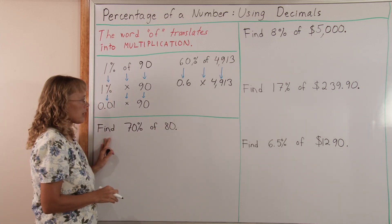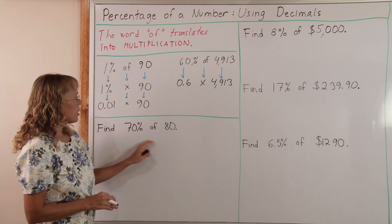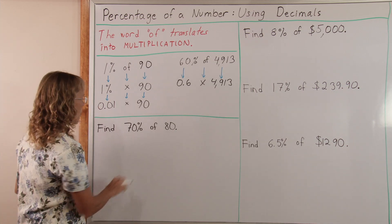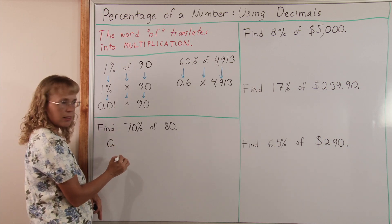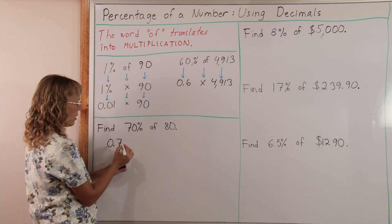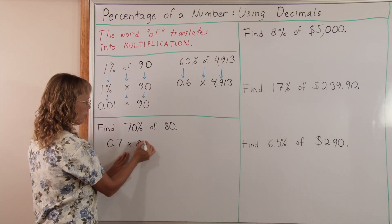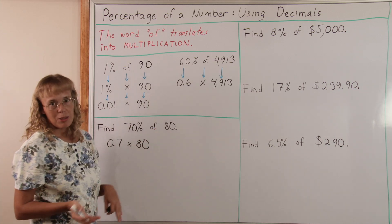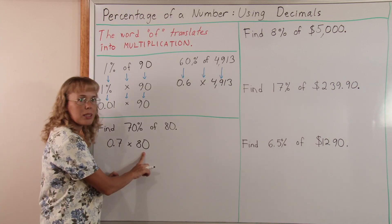Let's solve this without a calculator and find 70% of 80. I will write 70% as a decimal. It would be 0.70, right? Or 0.7. I don't need that other zero here. Of is times 80. Now we need to remember how to multiply when there's a decimal number. How to multiply with decimals.